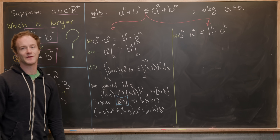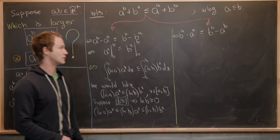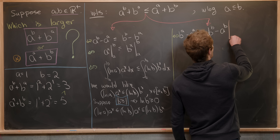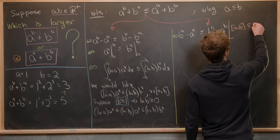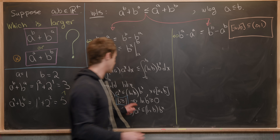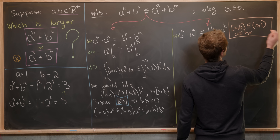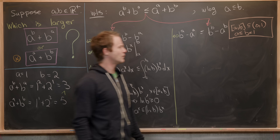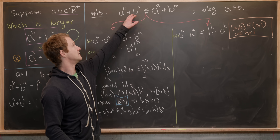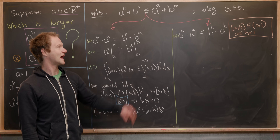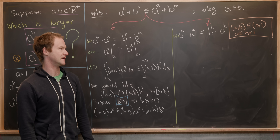Now we go down the other branch: the case when B is not greater than or equal to one. So the closed interval [A, B] is a sub-interval of the open interval (0, 1). This clearly follows from the fact that B is less than one and A is less than or equal to B. We take A strictly less than B, since if they're equal this is trivially an equality. We play the same game, turning the right-branch inequality into an integral.